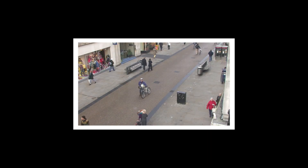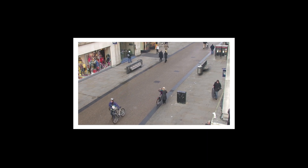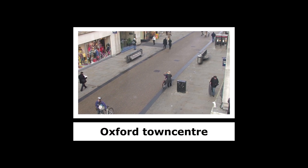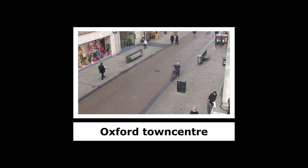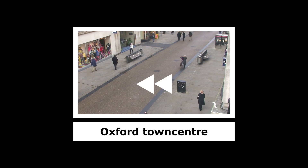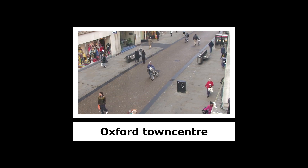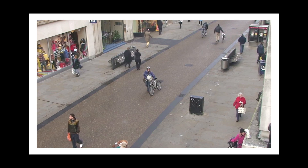One of the most iconic pieces of data in computer vision history is the Oxford Town Centre video. It's simply a video with people walking up and down the street, and we'll use it here as our testing video. So let's start at the beginning. What we're looking for here is to follow these people over time, so we want to be able to detect their location in the image as well as knowing where that same person was in the previous frames.